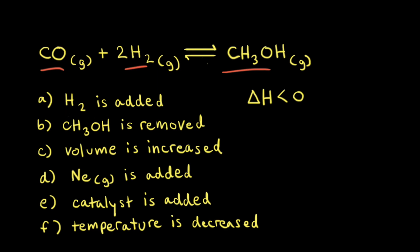For example, if we add some hydrogen gas to our reaction at equilibrium, we're increasing the concentration of one of our reactants. According to Le Chatelier's principle, the net reaction will move in the direction that decreases the stress placed on the system. So if the stress is an increased amount of one of the reactants, the equilibrium will shift to the right to get rid of some of that reactant.